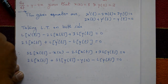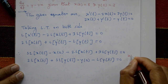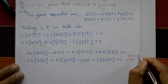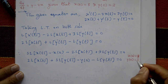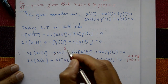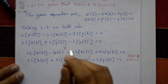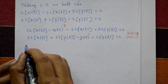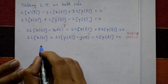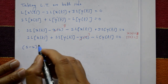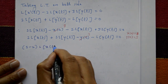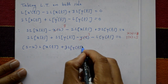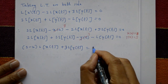Using the initial conditions x(0) = 8 and y(0) = 3, the first equation becomes: (s − 2)·Laplace[x(t)] + 3·Laplace[y(t)] = 8.